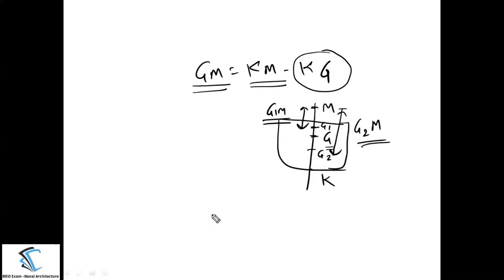The stability of the ship depends on the GM value. As already discussed, the range of GM is fixed for a particular ship. If GM is too high, the ship will oscillate very fast — that is called a stiff ship. If cargo is loaded such that the centre of gravity is raised and GM becomes very small but still positive, the ship will oscillate very slowly — that is called a tender ship.